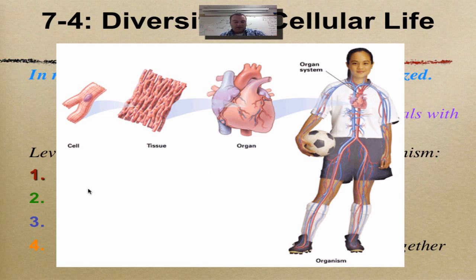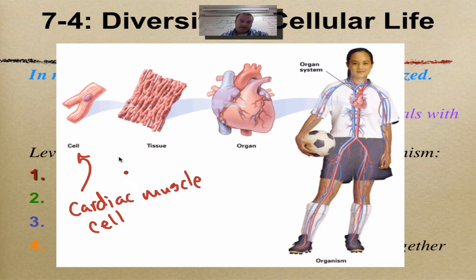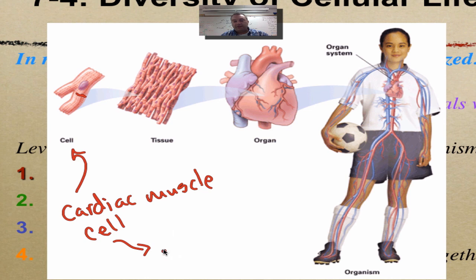Here's an individual cell — this is actually a heart cell, what we would call a cardiac muscle cell. Cardiac is the word that means heart. Cardiac muscle cells have these branches, and you see these little dashes — those are called intercalated discs, which allow signals from one muscle cell to get to another so they beat in unison. Cardiac muscle cells are very unique because they're actually branched, which you don't see in skeletal muscle like your biceps or pectoral muscles.